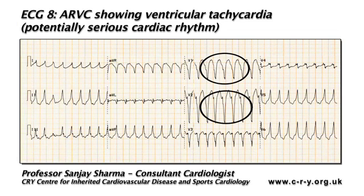Ventricular tachycardias with left bundle branch block morphology arise from the right ventricle. The identification of ventricular tachycardia with left bundle branch block morphology should therefore raise suspicion of disease in the right ventricle, and should lead to investigation for conditions such as arrhythmogenic right ventricular cardiomyopathy, holes in the heart associated with a large left-to-right shunt, and serious valvular problems affecting the right side of the heart.